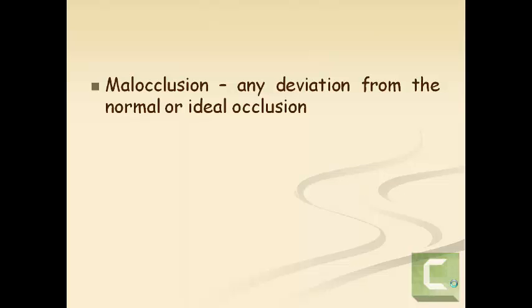What is malocclusion? It is any deviation from the normal or ideal occlusion. As we all know, normal occlusion is an occlusion with a class 1 molar relationship, a proper interdigitation with normal overjet, overbite, and without any other tooth malposition.